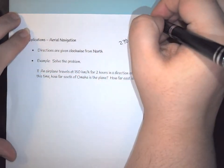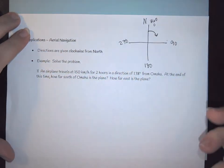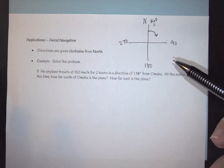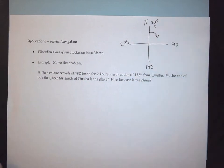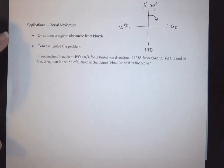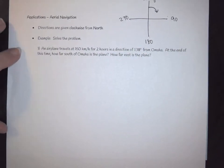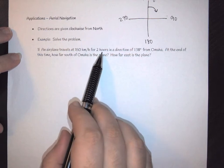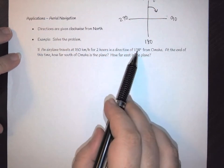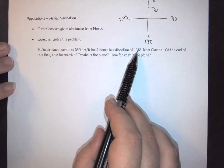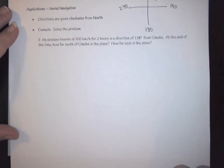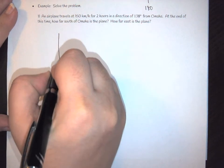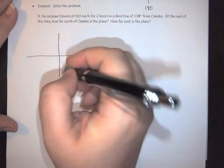So it all kind of shifted, and that idea is what has to be used. Here I've got this airplane problem. It says an airplane travels at 150 kilometers per hour for two hours in a direction of 138 degrees from Omaha. So first of all we need to look at what does that mean.